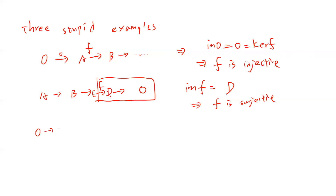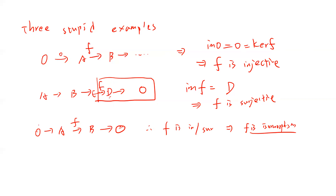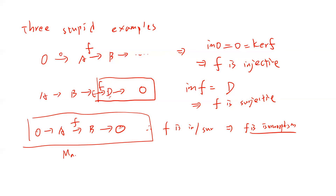A special case commonly discussed in algebraic topology is 0 → A → B → 0 with map f. This tells you f is both injective and surjective, so f is an isomorphism. This is very commonly used in algebraic topology — for example, if you want to compute the homology of the sphere, you use the Mayer-Vietoris sequence. So this type of exact sequence is commonly seen.